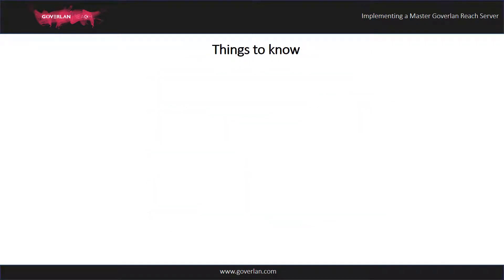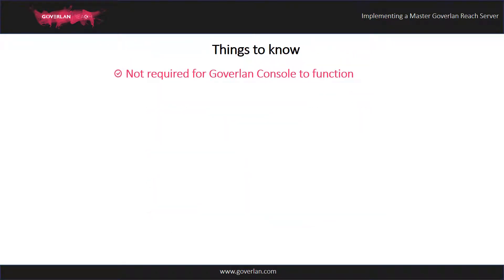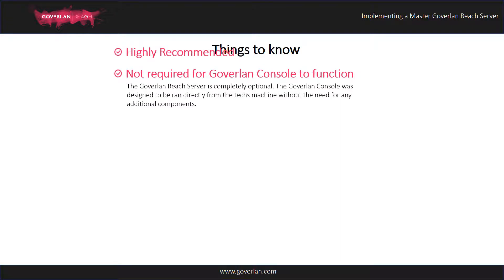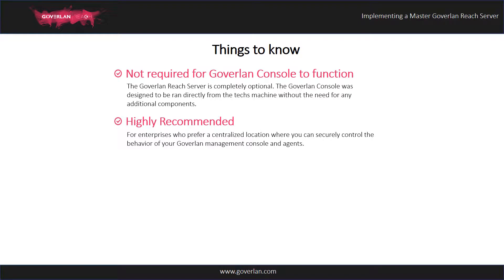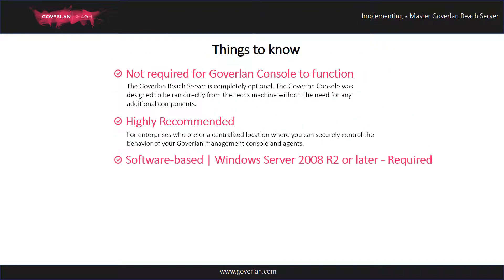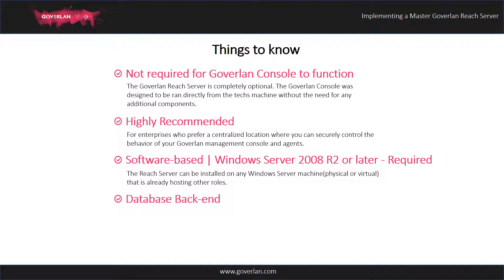Here are some important things to note before your setup. The Reach Server is not needed for the Goverland console to function, but we highly recommend it for easy centralized control of your Goverland console and agents. The Reach Server is 100% software-based and does not require any dedicated hardware. It can be installed on any Windows 2008 R2 server or above, even on a server that is hosting multiple roles like a domain controller.